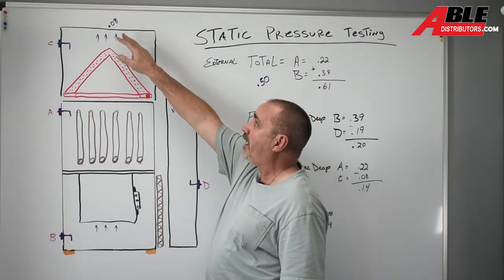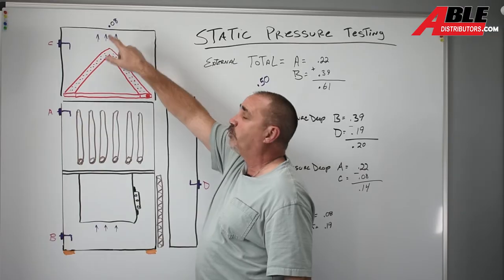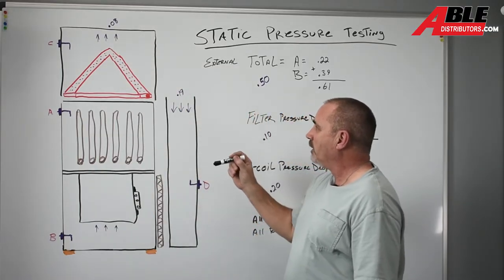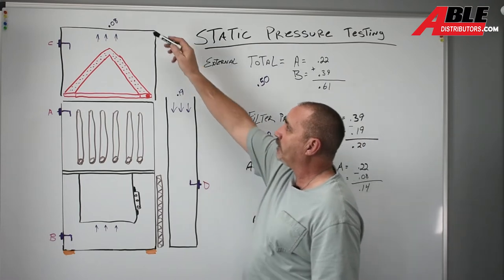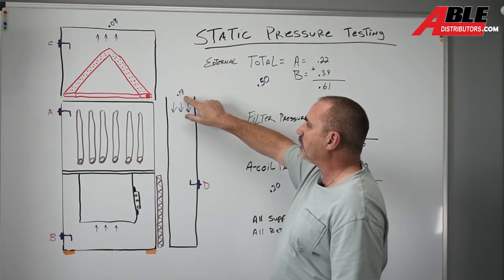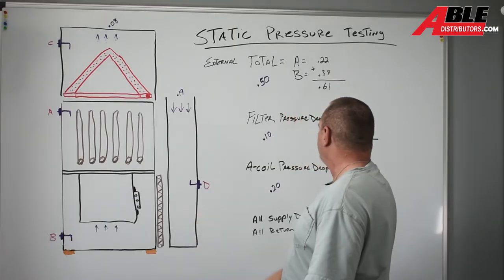And that also tells me that every single thing, every ounce of duct work past that, the static is 0.08, so that's pretty low. So now if you look at what we've done here, we can tell you now that the duct work on the supply is plenty good at 0.08. The duct work on the return at 0.19 and the filter at a 0.20, those are our issues.